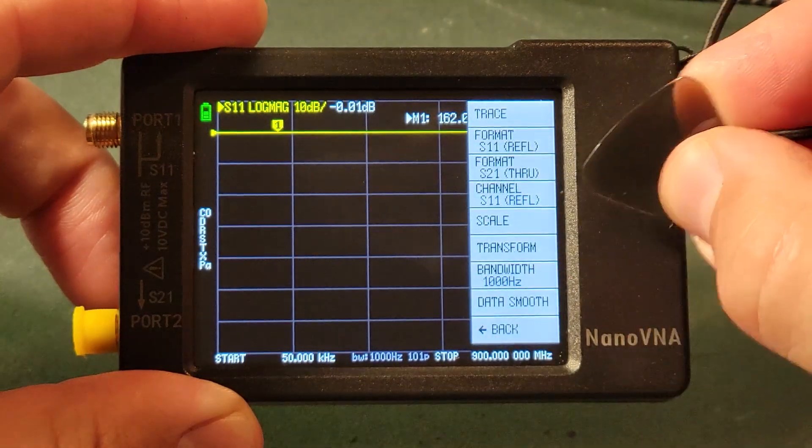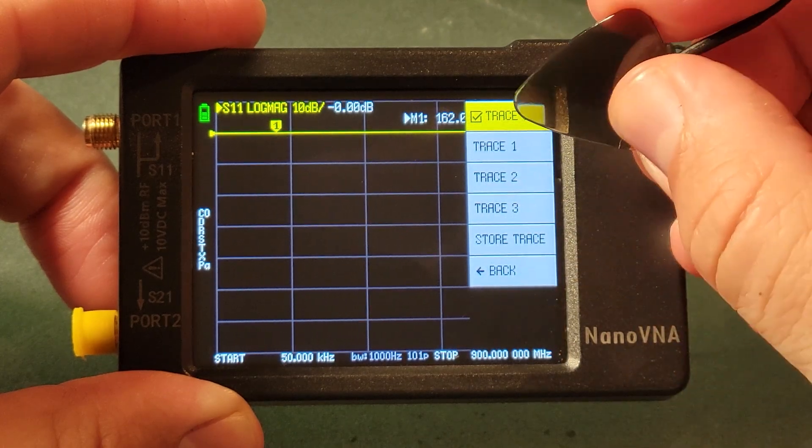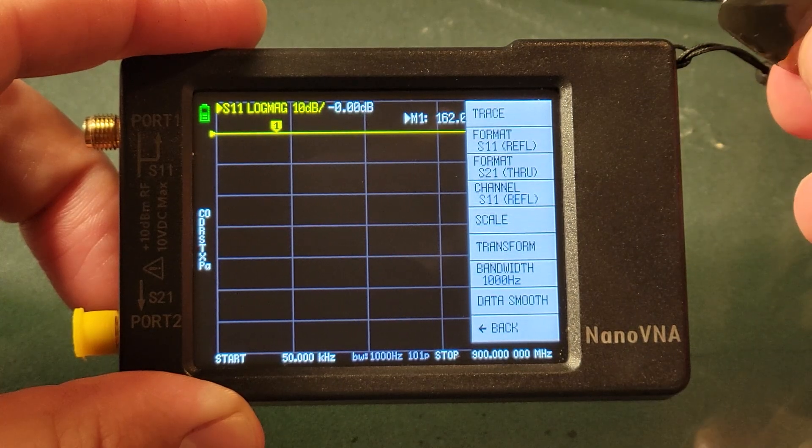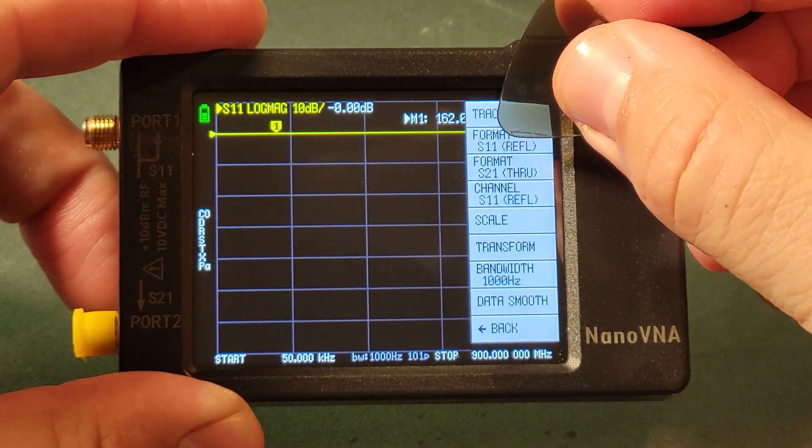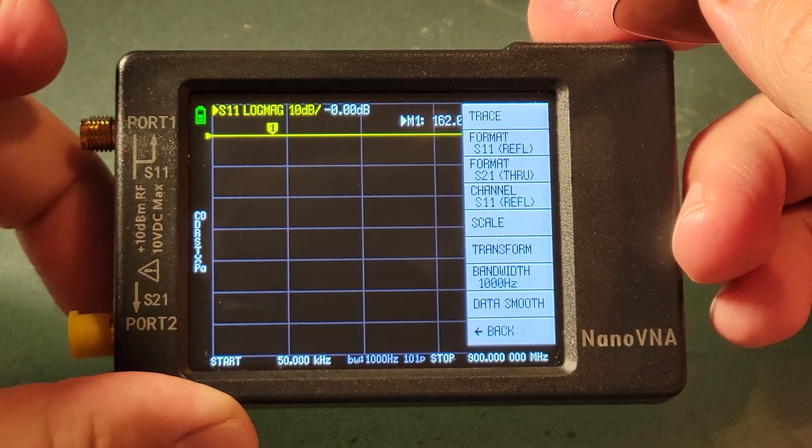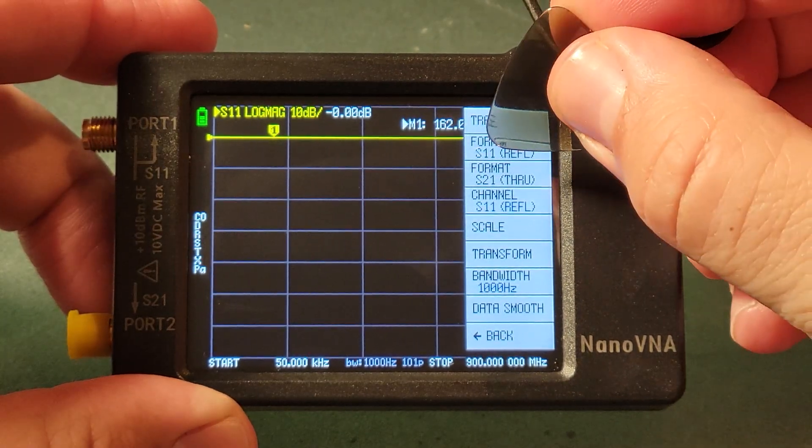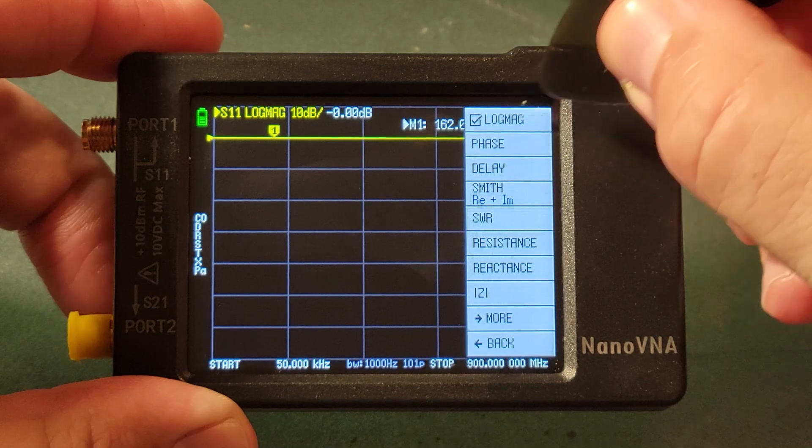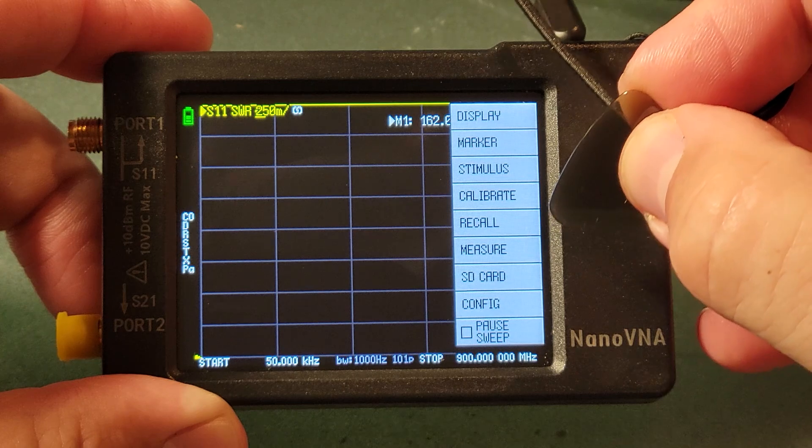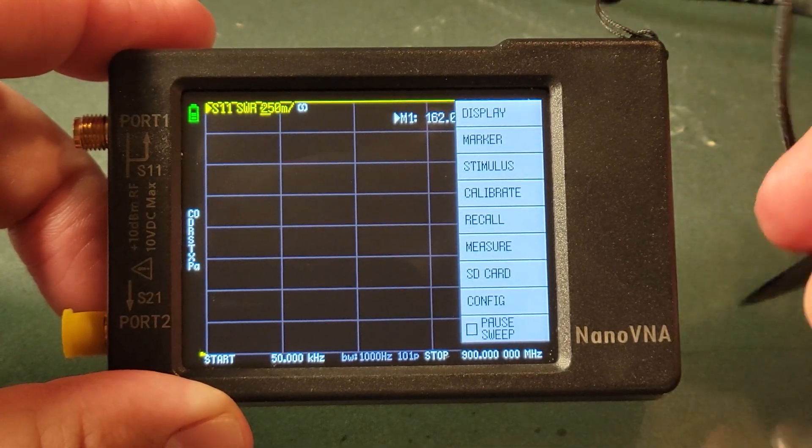Then we're going to go back and we had trace zero selected so with a little checkmark that tells us when we do additional configuration that is the trace that we are configuring. We're going to change the format of that. Notice again that it says it up here S11 corresponding to port one. It's measuring log mag so we want to change that and we're going to go to format here in the menu. We'll go down here to SWR and then go back to our main menu and then we're going to tell the device what range we want to measure.